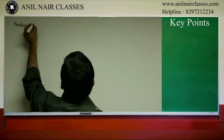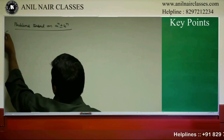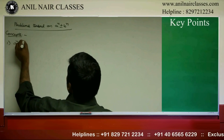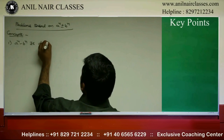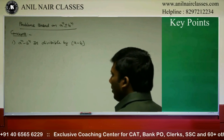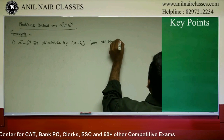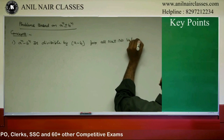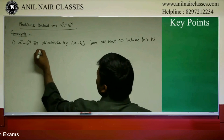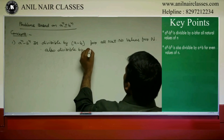Problems based on A power n and B power n concepts. A power n minus B power n is divisible by A minus B. When n takes all natural number values, it is also divisible by A plus B.